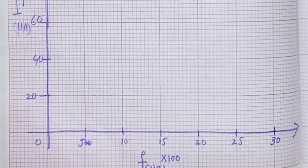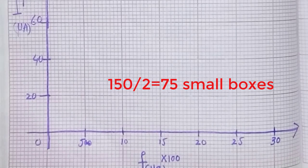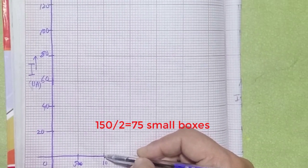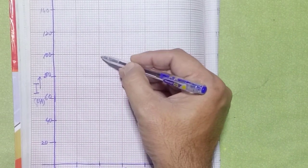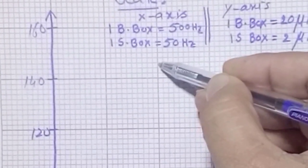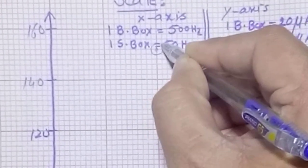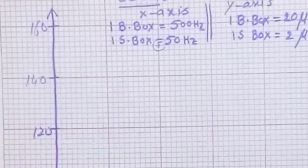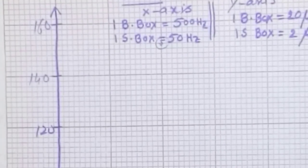Now we find the corresponding box for the current. The reading was 150 microamperes, so we divide 150 by 2 to get 75 small boxes. We count up 75 small boxes from this point: 10, 20, 30, 40, 50, 60, 70, 71, 72, 73, 74, and 75. This point represents 150 microamperes. This is our first plotted point.